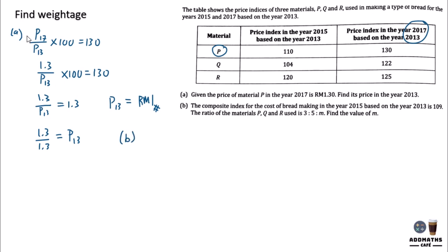For B, you are required to find composite index of 2015 based on 2013. So you are finding this and the answer is 109. So you know that the composite index I15/13 is 109. And how to find composite index?